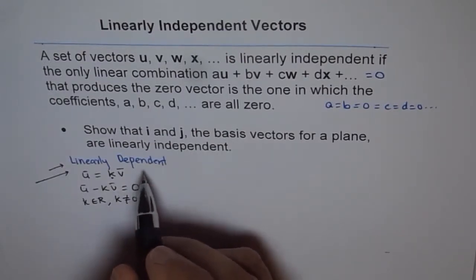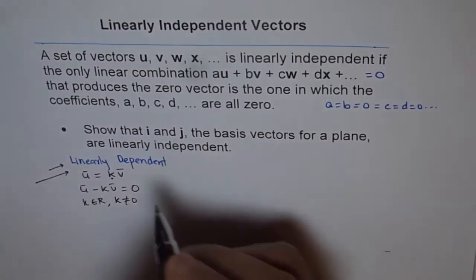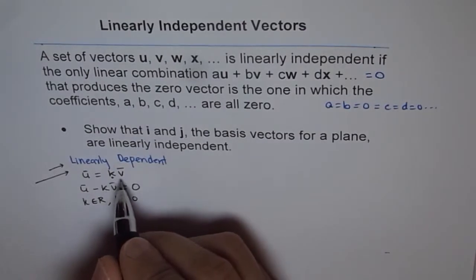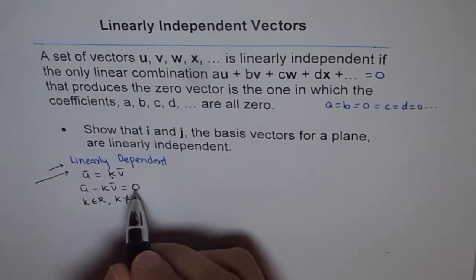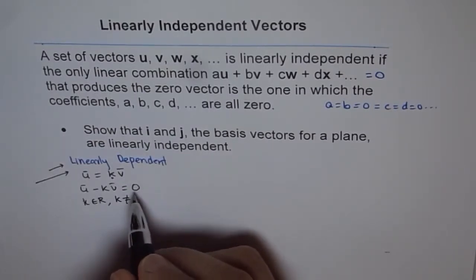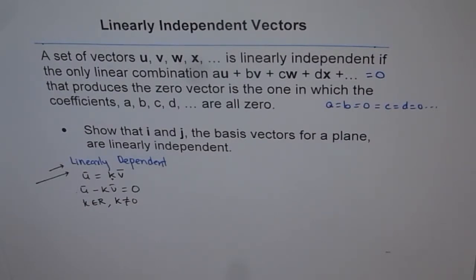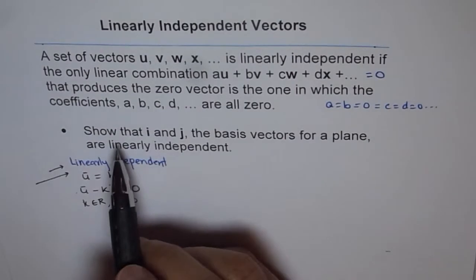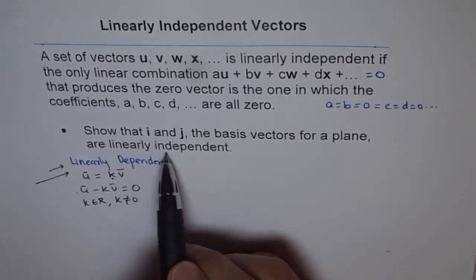In the case of independent vectors, they are not scalar multiples of each other, so their combination is not equal to 0. If we say that combination equals 0, that is possible only if both coefficients are 0. That is the definition of linearly dependent and independent vectors. Now let us prove this with an example: show that i and j, the basis vectors for a plane, are linearly independent.